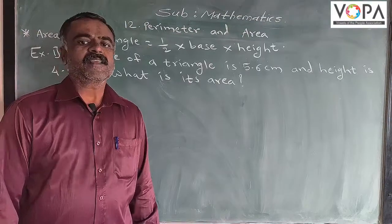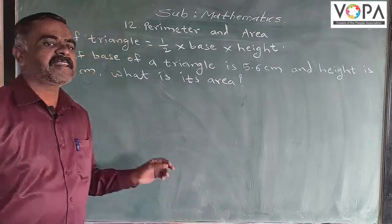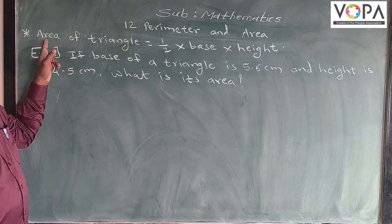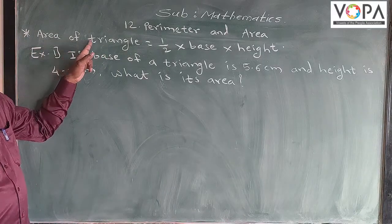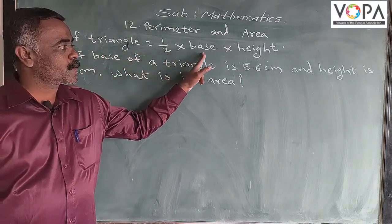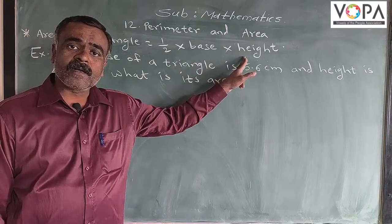Next is area of triangle. The formula is: area of triangle is equal to one half into base into height.